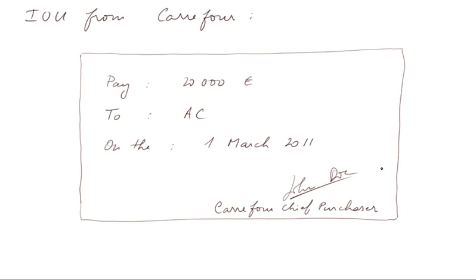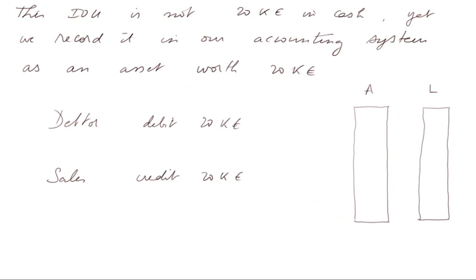Actually, it is an order given by Carrefour to its own banker to pay me, but this piece of paper is given to me. This AOU is not 20,000 euros in cash, yet we record it in our accounting system as an asset worth 20,000 euros. The debtor's account will be debited 20,000 euros, and if it's a sale, the sales account will be credited 20,000 euros. There will be an impact on the balance sheet.